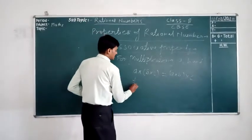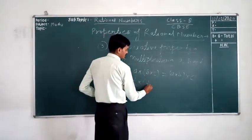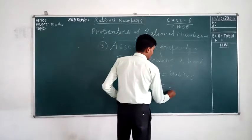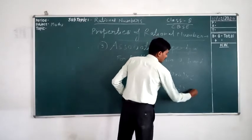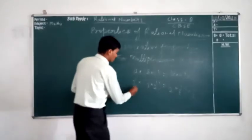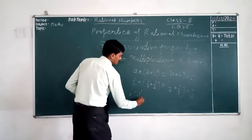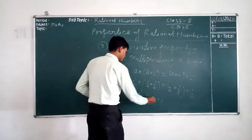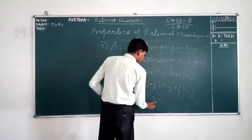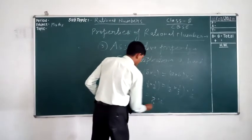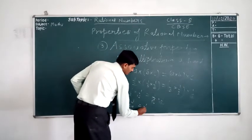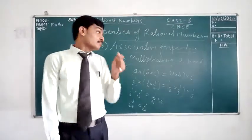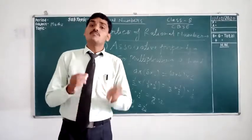Let's take an example: (1/2 × 1/3) × 1/4 and 1/2 × (1/3 × 1/4). On the left: 1/2 × 1/3 = 1/6, then 1/6 × 1/4 = 1/24. On the right: 1/3 × 1/4 = 1/12, then 1/2 × 1/12 = 1/24. We get the same answer, so rational numbers are associative for multiplication.